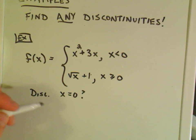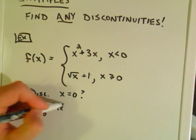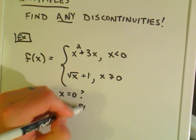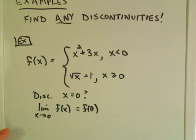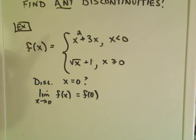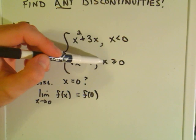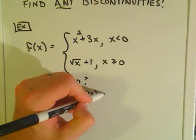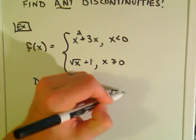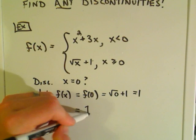To address that question, we have to look at the limit as x approaches 0 of our function and determine if that equals f(0). To determine f(0), we just plug into the correct piece — the second one, since it's used for x greater than or equal to 0. So we get square root of 0 plus 1, which equals 1. So f(0) equals 1.